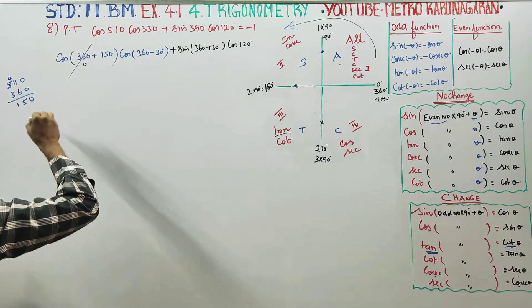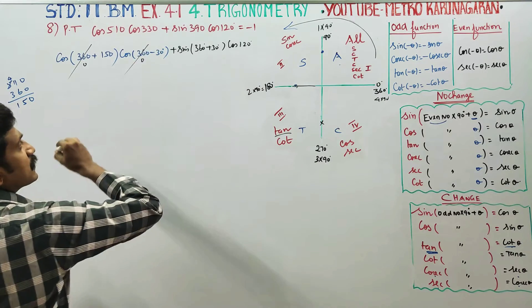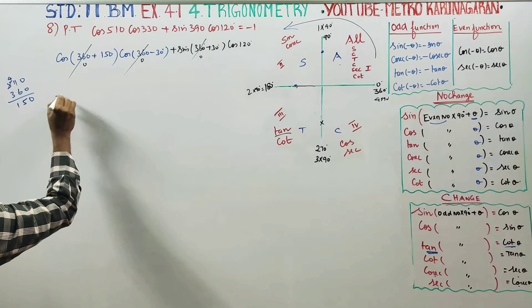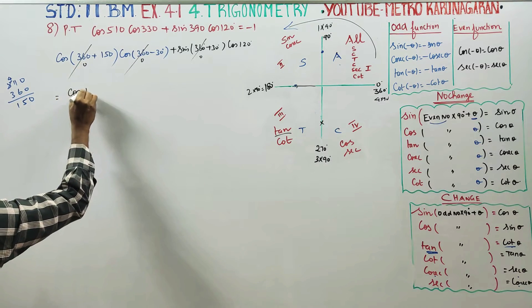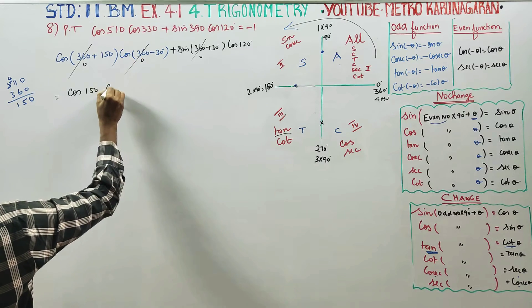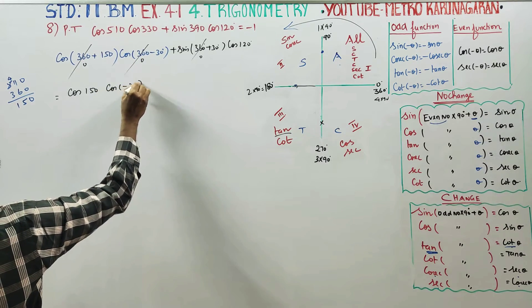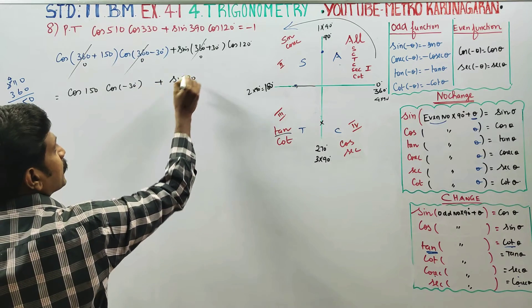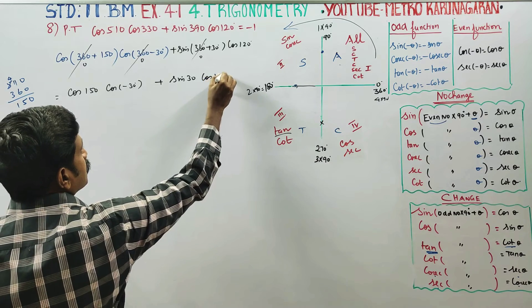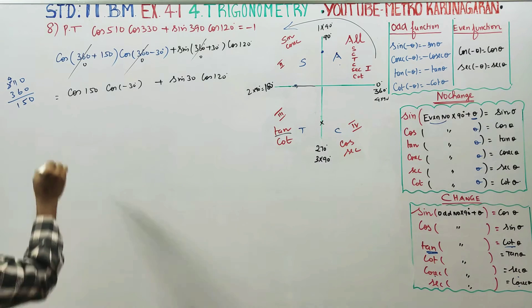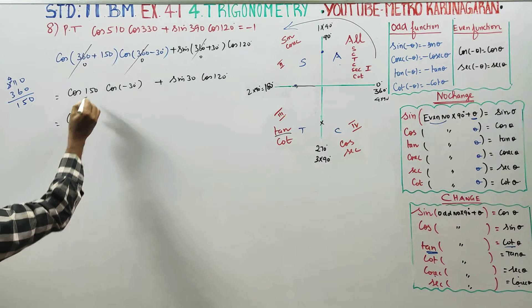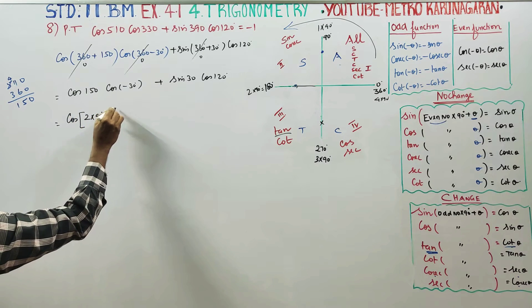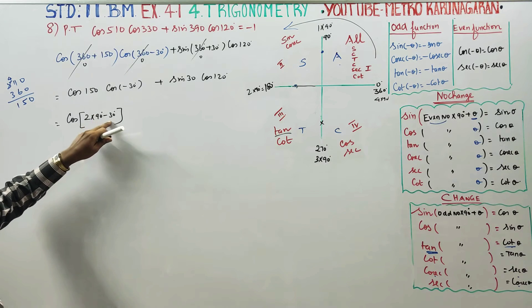You can determine the quadrant — 3, 4, 0, 4 — and cancel accordingly. Cos of 2 into 90 minus 30: here 2 into 90 equals 180.